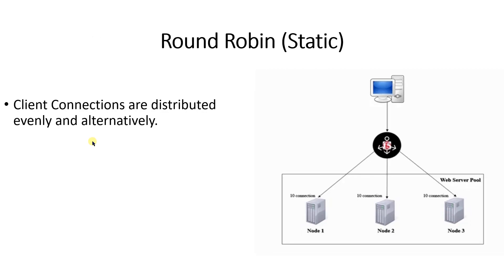Next comes the round robin static load balancing method. In round robin, the client connections are distributed evenly and alternately among all the pool members of the server pool. The first request will go to node one, the second request will go to node two, the third request will go to node three, and then again the fourth request will go to node one. It is distributed evenly.